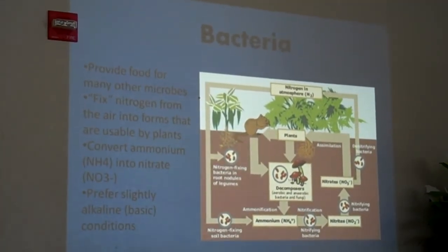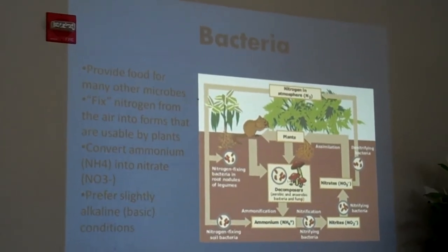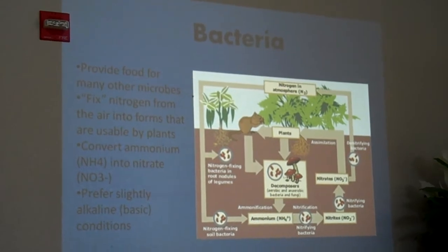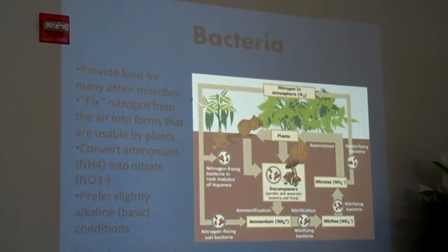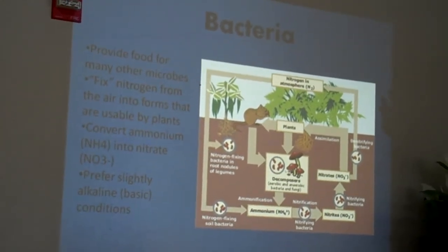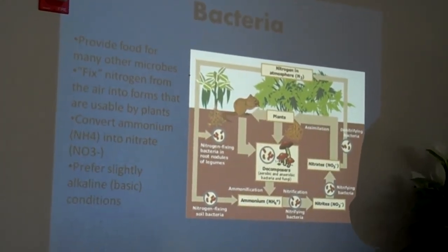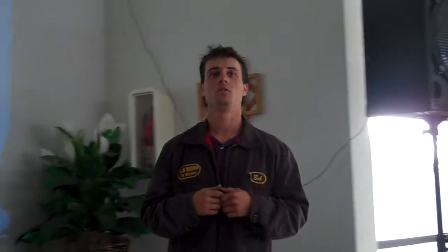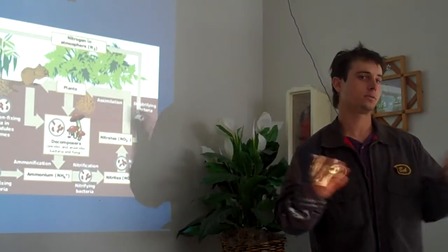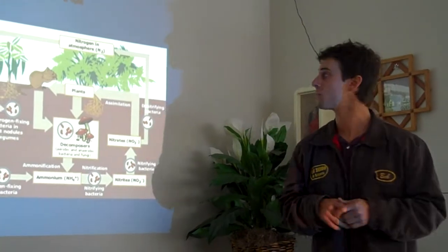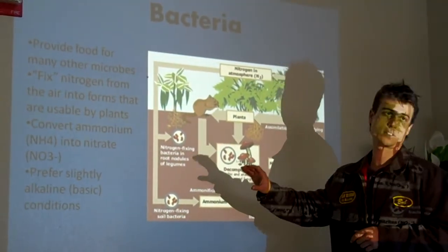Bacteria provide food for many other microbes, things like nematodes and protozoa. There are types that convert nitrogen from the air — a lot of people don't realize that air is not mostly oxygen, it's mostly nitrogen gas. Without the presence of these bacteria pulling nitrogen in the form of N2 out of the air, our life would look very, very different. We don't have a way of taking nitrogen out of the air and turning it into a usable form ourselves. That's a really important role that they play.